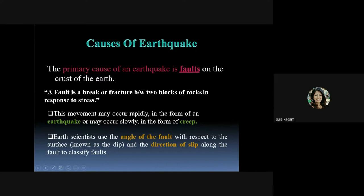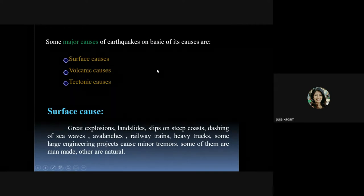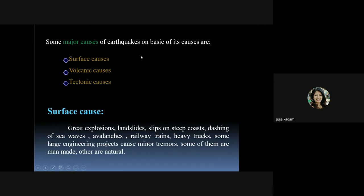Earth scientists use the angle of the fault with respect to the surface, known as the dip, and the direction of slip along the fault to classify faults. The major causes of earthquake based on its origin are: surface causes, volcanic causes, and tectonic causes. These are the three major causes.